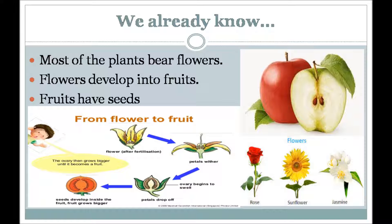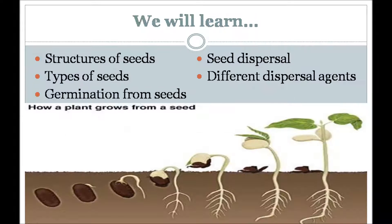Seeds are also an important part of the plant. Seeds produce new plants. In this video, we will learn about the structure of seeds, types of seeds, germination from seeds, seed dispersal and different dispersal agents. We already know about vegetative propagation through fruits, stems and leaves. Now we will learn how plants reproduce through seeds.